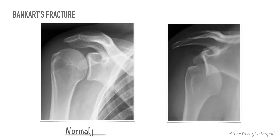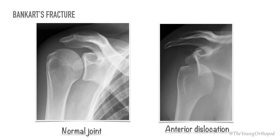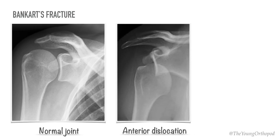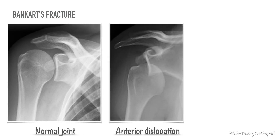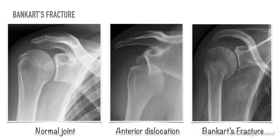When the Bankart's lesion is associated with an anterior glenoid fracture, it is called a Bankart's fracture. On this x-ray the dislocation has been reduced and you can see the bony fragment of the glenoid rim.